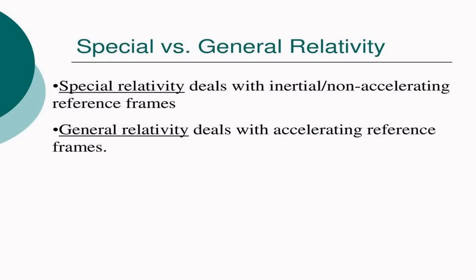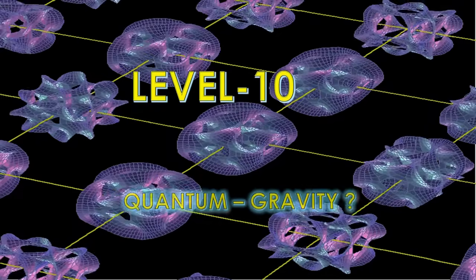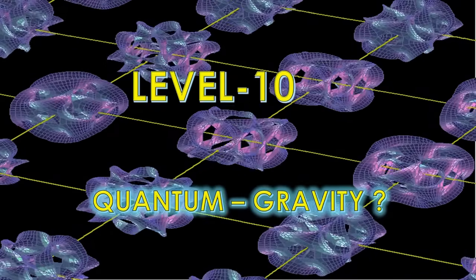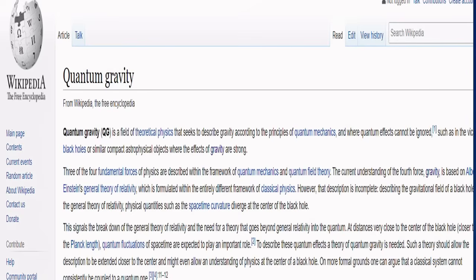Level ten: quantum gravity. It is a field of theoretical physics that seeks to describe gravity according to the principles of quantum mechanics, where quantum effects cannot be ignored — like when you have a very strong gravitational field such as that of a black hole.